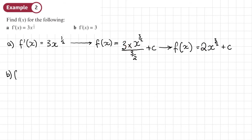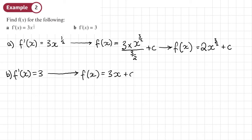Part b: we've got f'(x) equals 3. What happens to constants when we integrate? When we integrate a constant, it just becomes a constant times x. So f(x) equals 3x, and then plus C. A constant just becomes a constant times x — and don't forget our plus C.